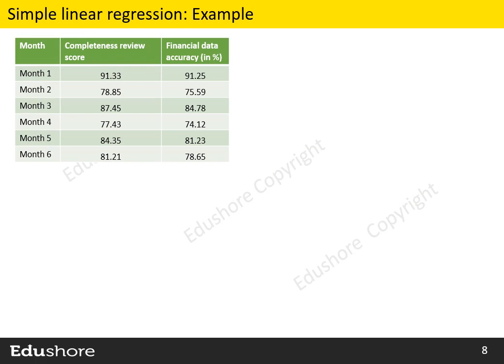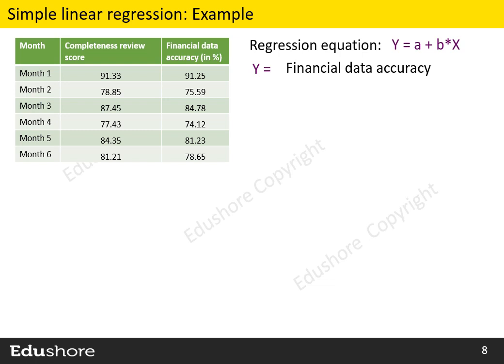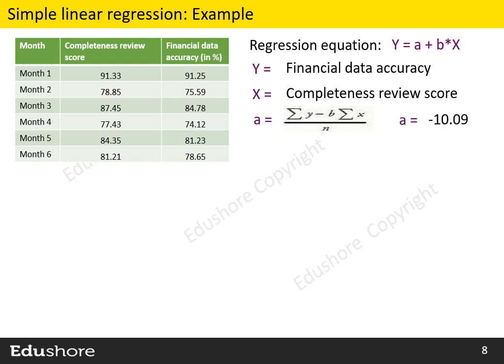Here is the data of X and Y: X is the completeness review score, and Y is the financial data accuracy. With this data, we can arrive at the regression equation Y = A + B×X. We can arrive at the value of A and the value of B by using their respective formulas. Instead of doing the calculations manually, we may use the regression function in MS Excel. After using the regression function in MS Excel, we get the values of A and B.